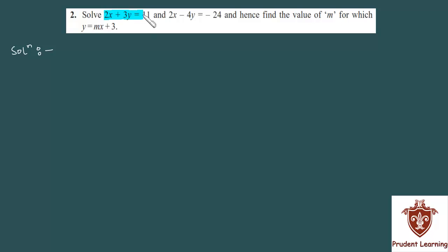Solve 2x plus 3y is equal to 11 and 2x minus 4y is equal to minus 24, and hence find the value of m for which y is equal to mx plus 3.